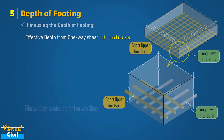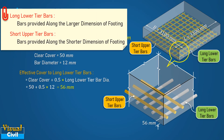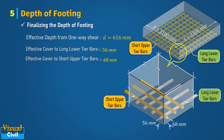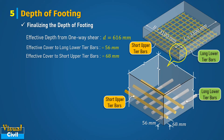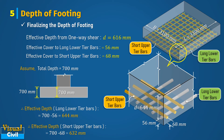Now finalize the depth of footing. Assume clear cover to reinforcement bar equal to 50 mm and bar diameter equal to 12 mm. Hence, the effective cover to long lower tier bar is calculated as 56 mm, while the effective cover to short upper tier bar is 68 mm. Assume total depth equal to 700 mm at the column face and keep the same depth at the end as it is a pad footing. So effective depth for the long lower tier bar is 644 mm and for the short upper tier bar is 632 mm.